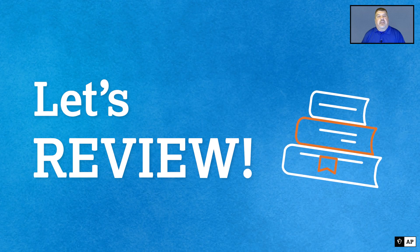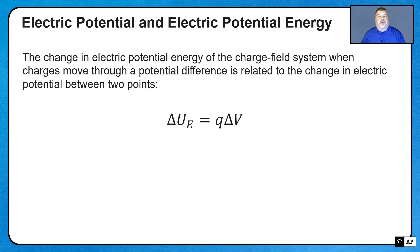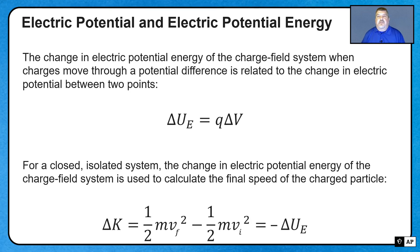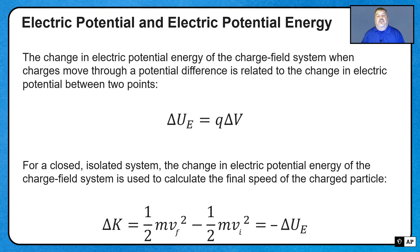Let's review some of the key ideas we're going to need in this video. The change in electric potential energy of a charge-field system when a charge moves through a potential difference is related to the change in electric potential between those two points. That change in potential energy equals the charge that's moving times the potential difference between the two points. And if we have a closed isolated system with no energy being added or removed, and no interactions with objects outside the system, then the change in electric potential energy can be used to calculate the final speed of the charged particle.